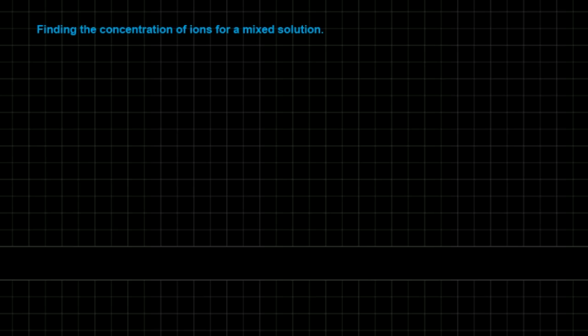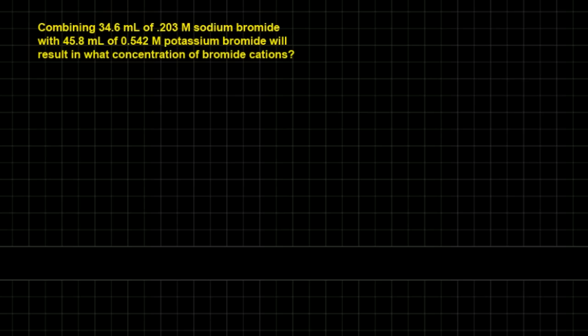So in a problem like this, what you're going to be looking for is you're going to have two different volumes of a certain concentration of a solution and they're going to be different solutions. So in this case 34.6 milliliters of sodium bromide and it's 0.203 molar. So the thing we're looking for is how many bromide cations are there - really we're looking for an answer that comes out in moles per liter. So let's just write that up here so we don't forget. Moles per liter.